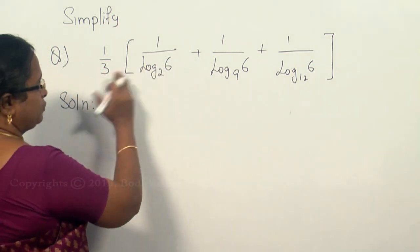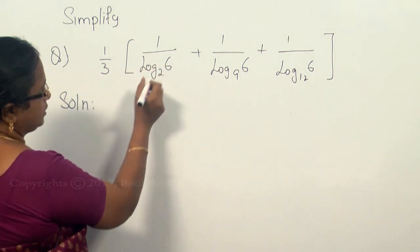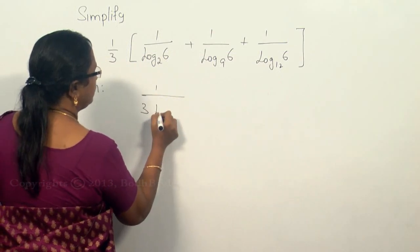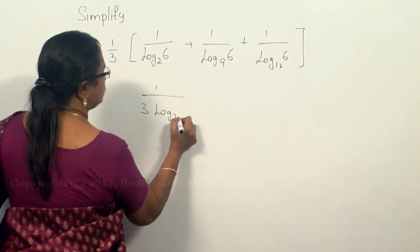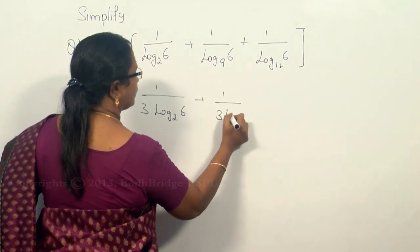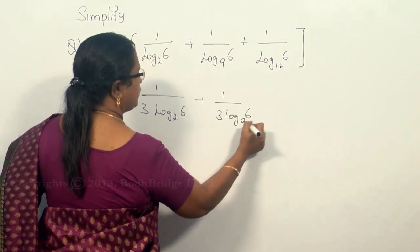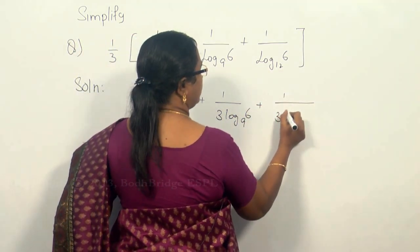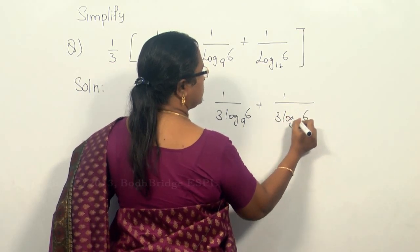The first thing is we'll bring this one-third inside and see what happens. So here it is: 1 divided by 3 log 6 to the base 2 plus 1 by 3 log 6 to the base 9 plus 1 by 3 log 6 to the base 12.